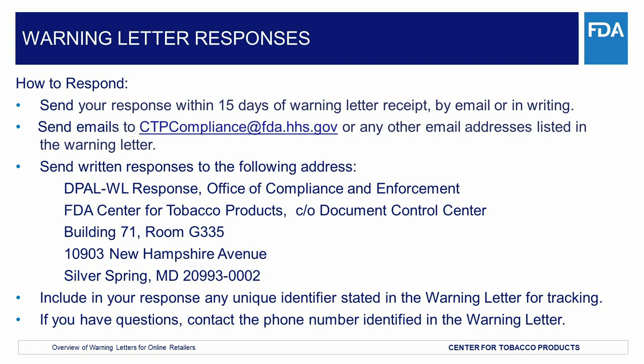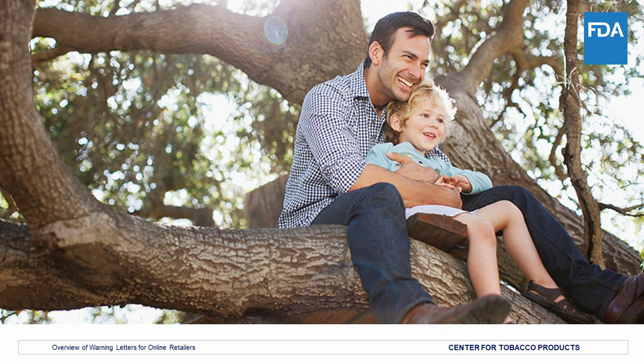Once corrective actions have been made and the response has been drafted, the warning letter response should be sent via email to ctpcompliance@fda.hhs.gov or any other email addresses listed, and/or sent to the following address: DPAL WL Response, Office of Compliance and Enforcement, FDA Center for Tobacco Products, in care of Document Control Center, Building 71, Room G-335, 10903 New Hampshire Avenue, Silver Spring, MD 20993-0002. Include in your response any unique identifier stated in the warning letter, found at the end of the warning letter. If you have questions about the warning letter, contact the phone number identified in the warning letter or email address. This presentation is concluded. Thank you for attending.